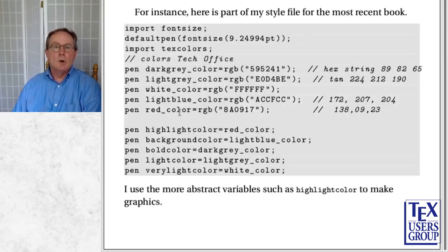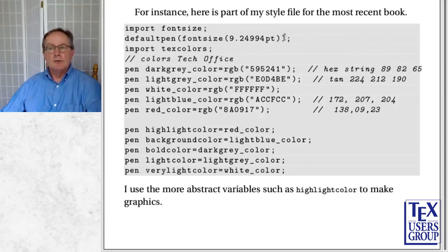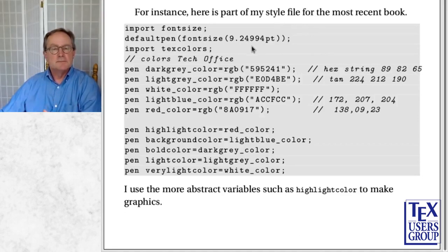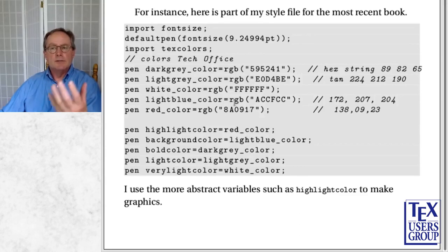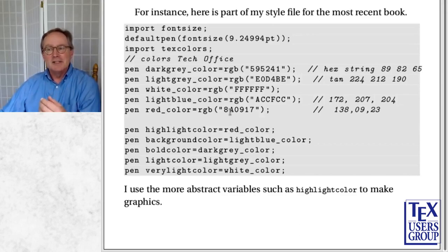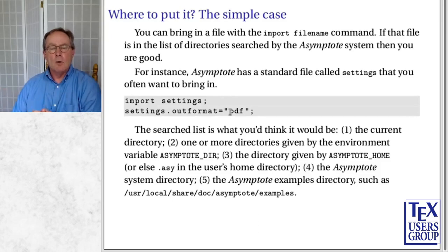Here is part of my style file for the most recent book, as an example of the kind of stuff you want in there. I set the font size used to draw all the figures — slightly smaller than regular font size, LaTeX small, which is why it has those decimal places. Then I set the colors. In my figures I use highlight color, background color, bold color, light color, very light color, and so on. I can change those colors without changing their names by setting them — a certain amount of abstraction. So I'm setting the colors used across all the graphics in the whole book.